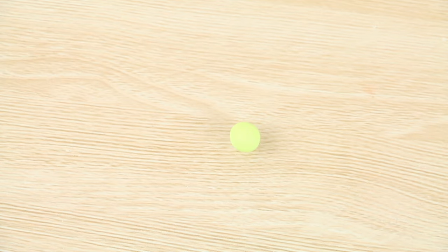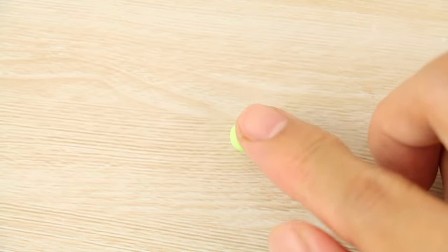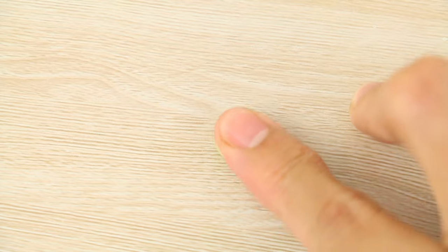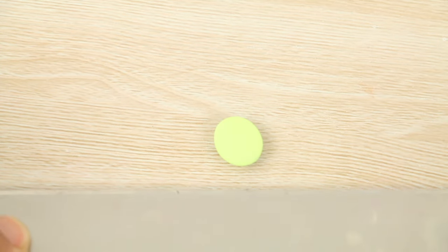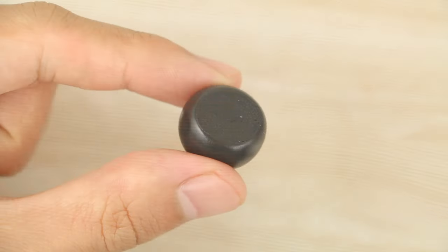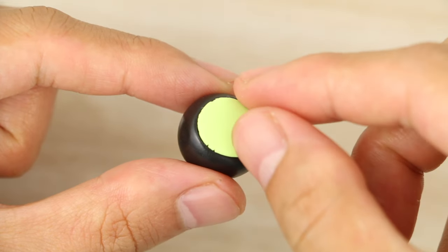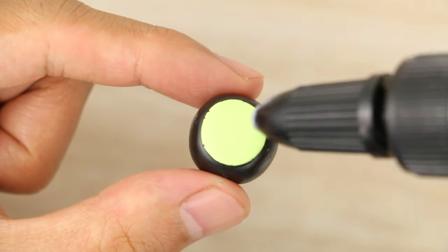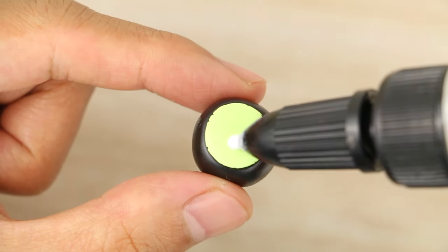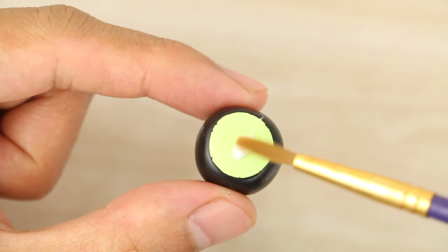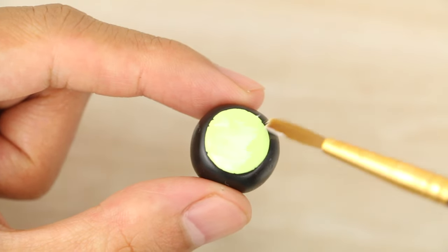I then have a small ball of green clay and I'm gently pressing it down with my finger into a disc, then sliding a blade under it to remove it from my work surface and placing it on top of the flat side of the black ball.